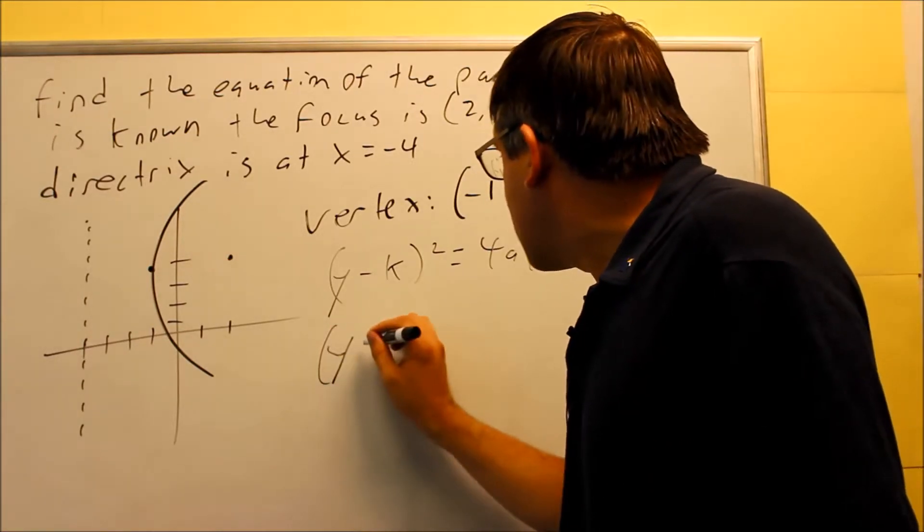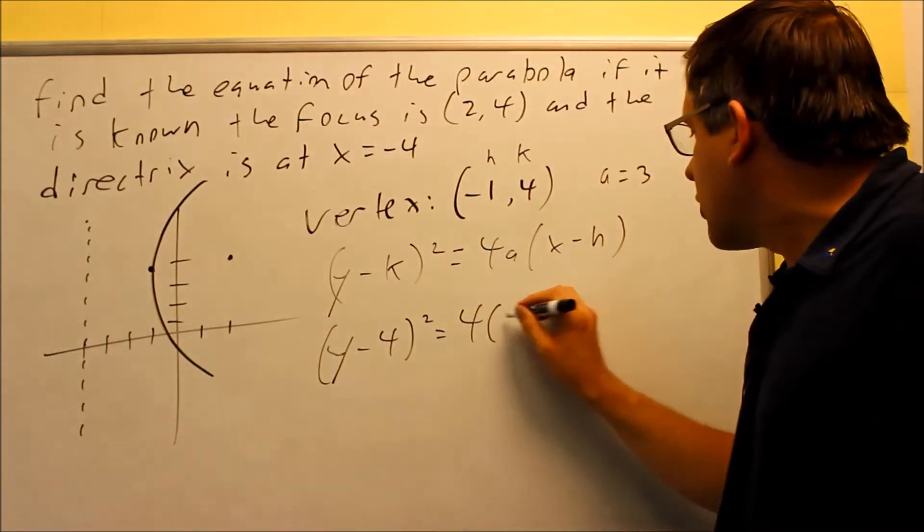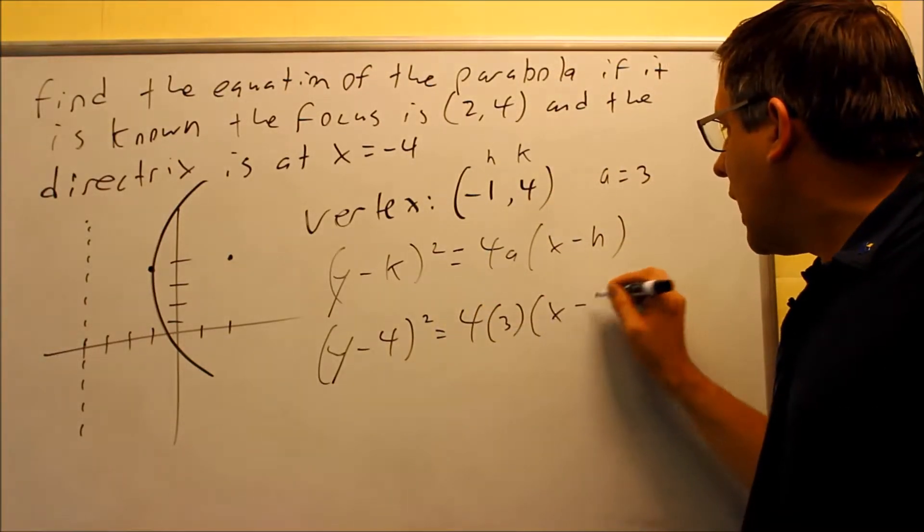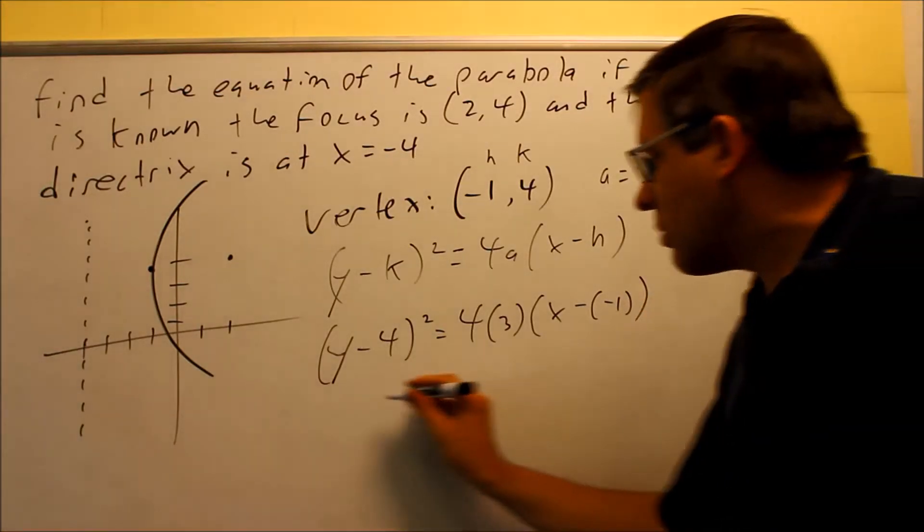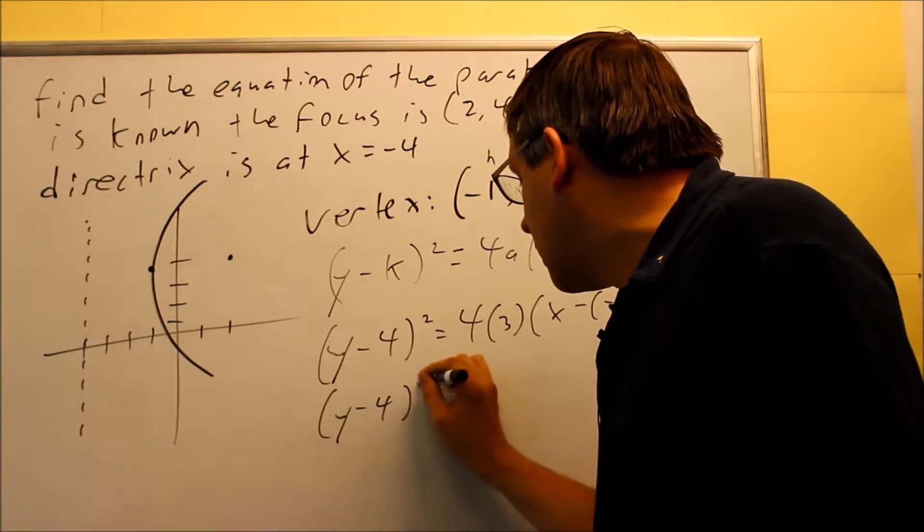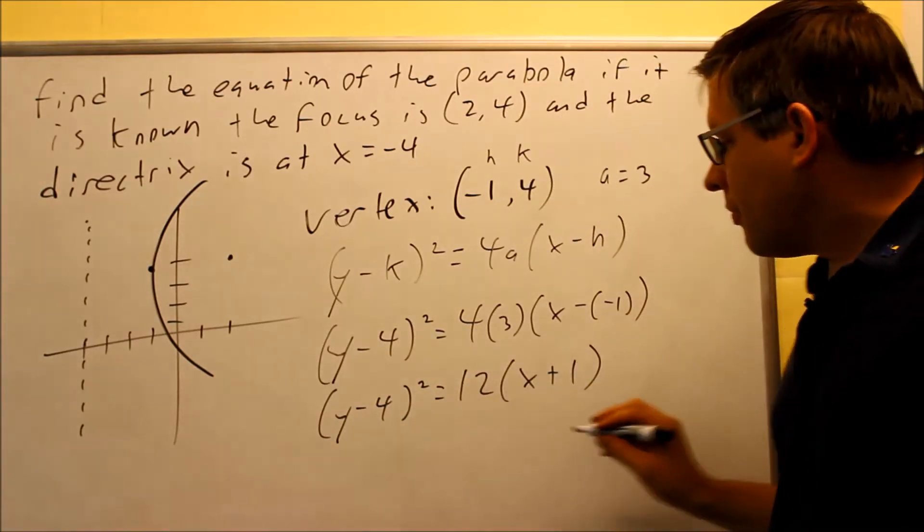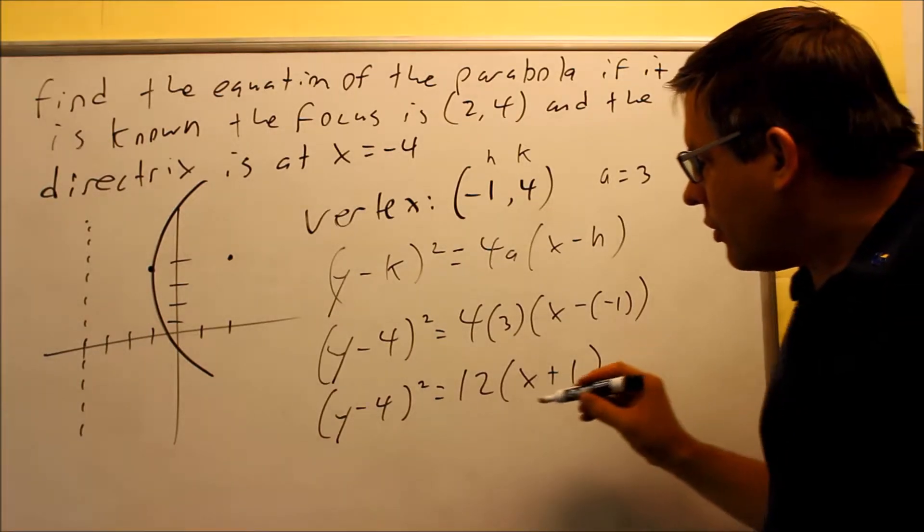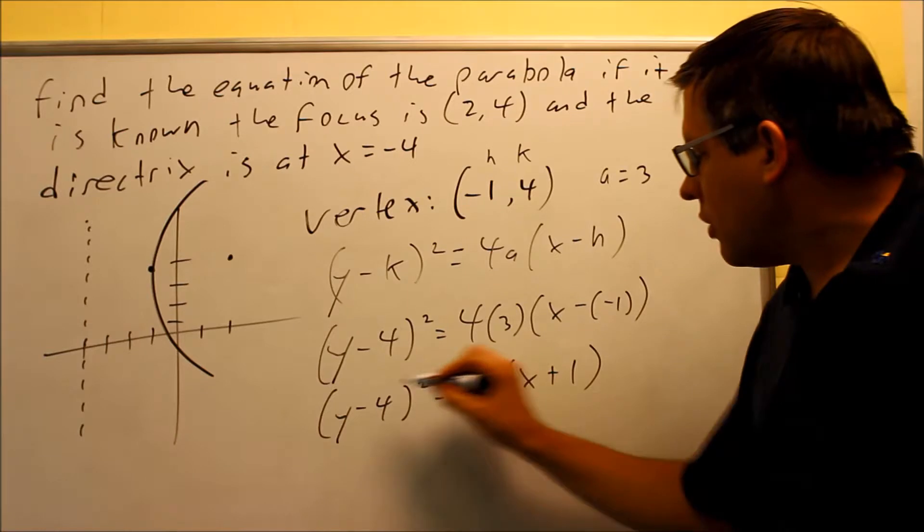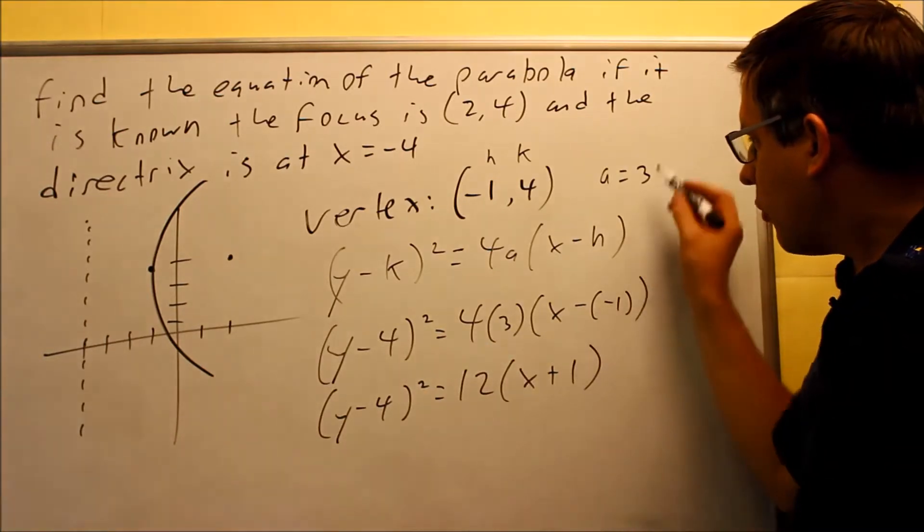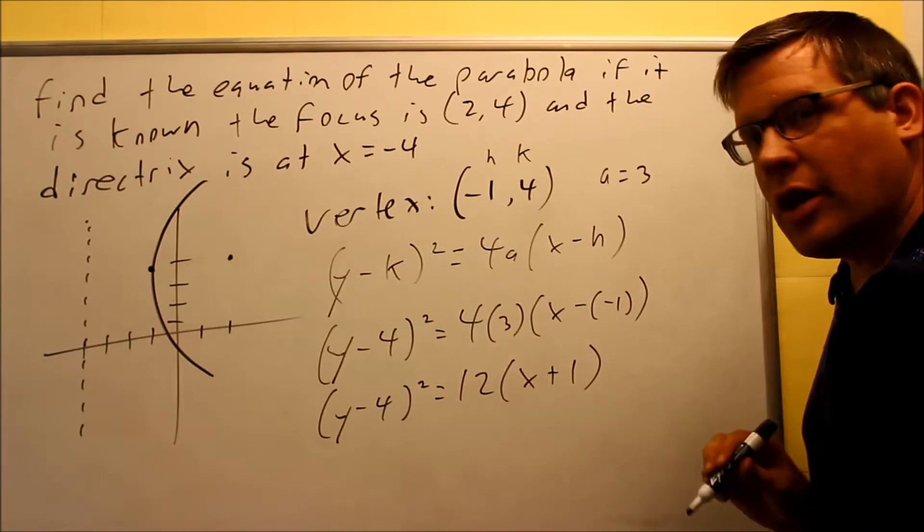So I have y minus k, y minus 4 squared equals 4 times the a, I'll just put a 3 in there for that. And I have x minus negative 1. Now I'm just going to simplify this. y minus 4 squared will equal 12 times x plus 1. And that's going to be your final answer. We have it goes through that particular vertex because we plugged in the information for it. And we put the correct a value in and everything. So this will be our final answer.